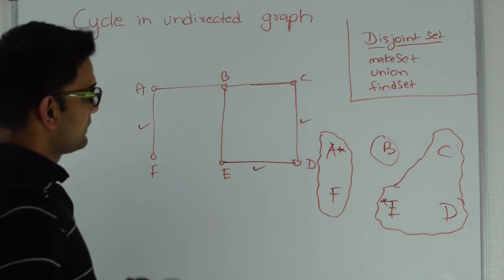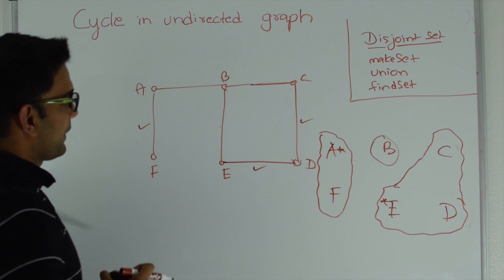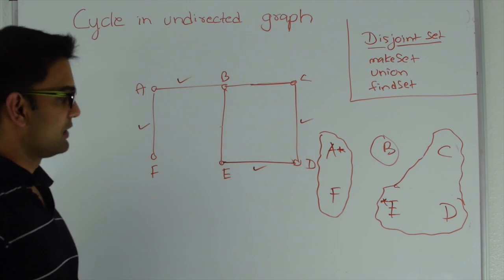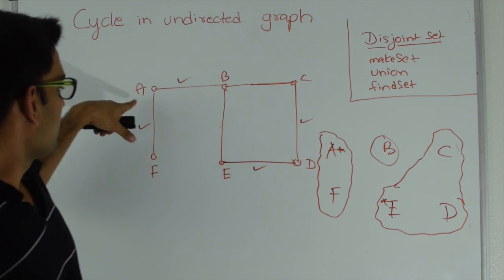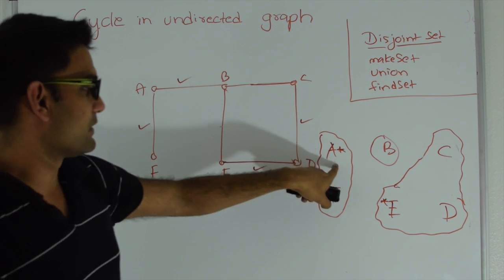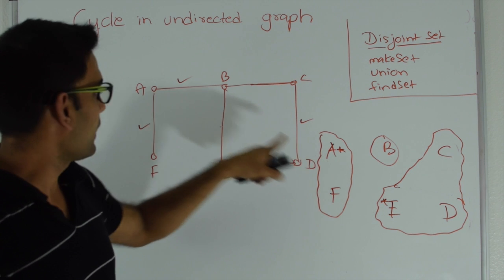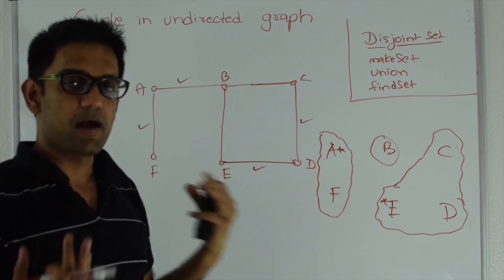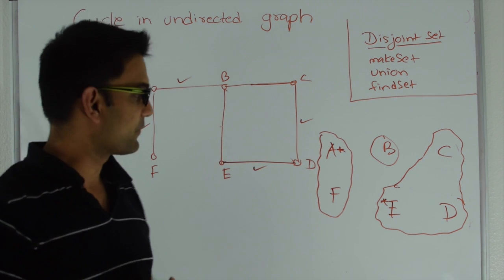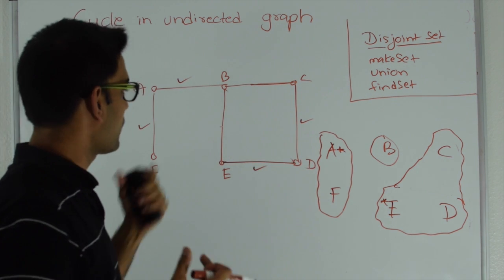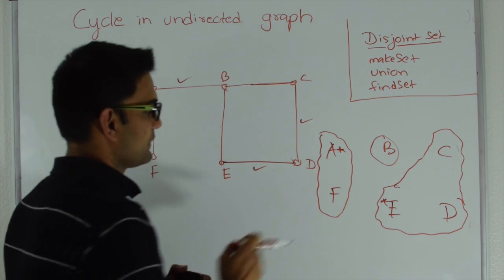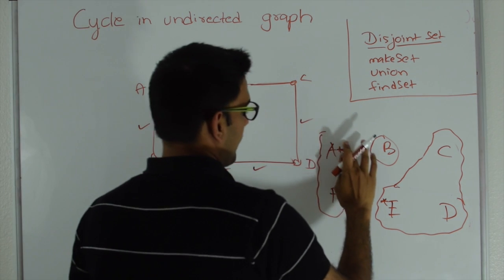Next let's pick edge A-B. A is represented by A and B is represented by B. Again they are in two different sets, so adding this edge is not going to create a cycle. Let's union these two sets.